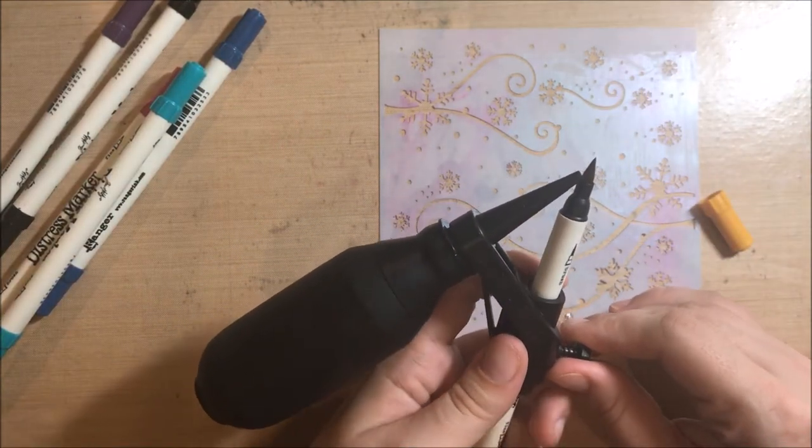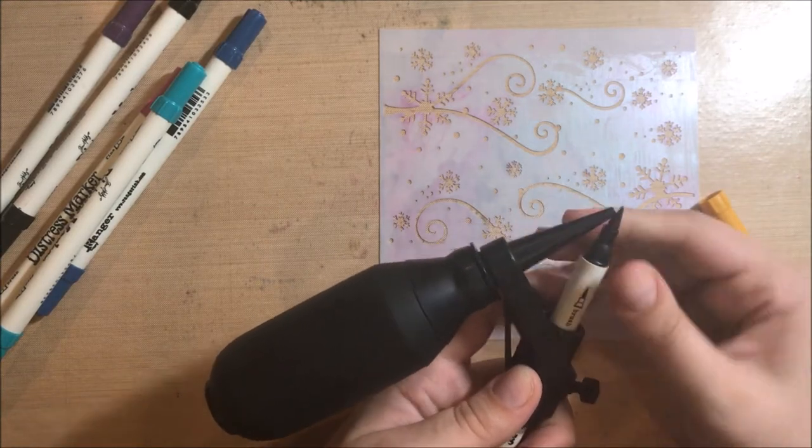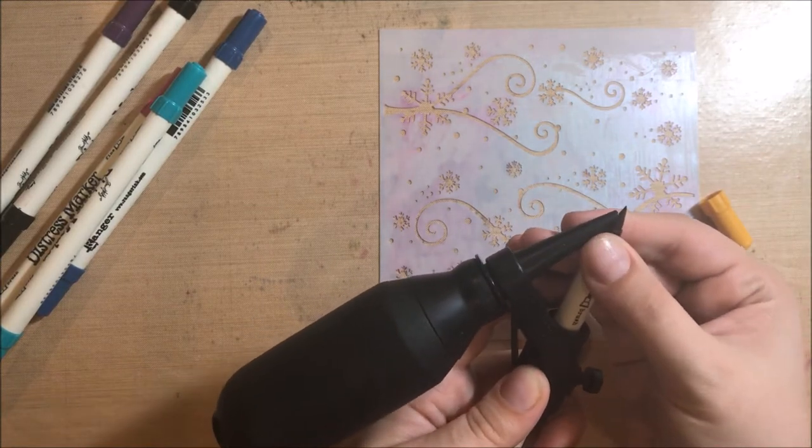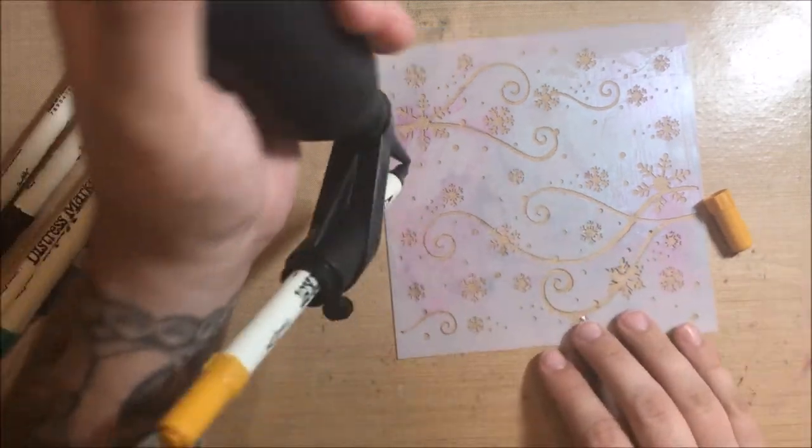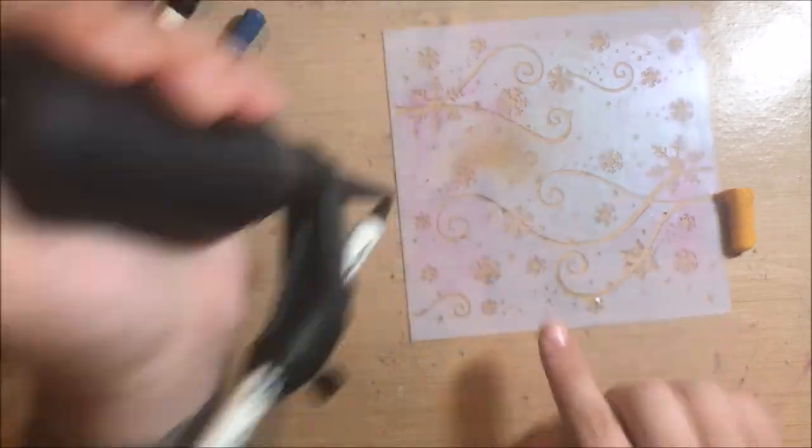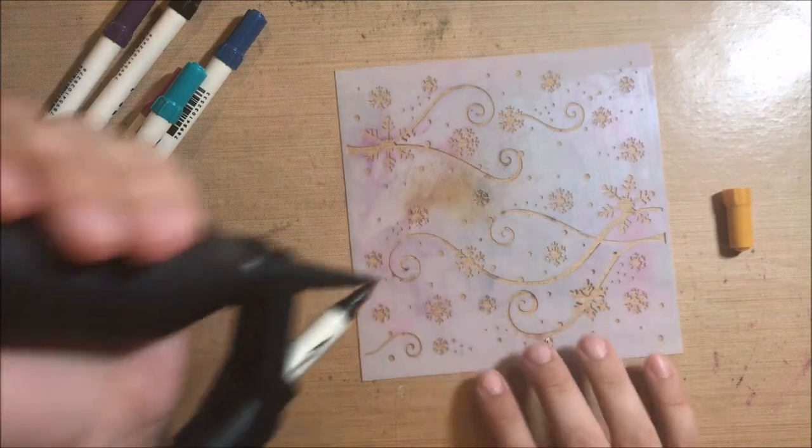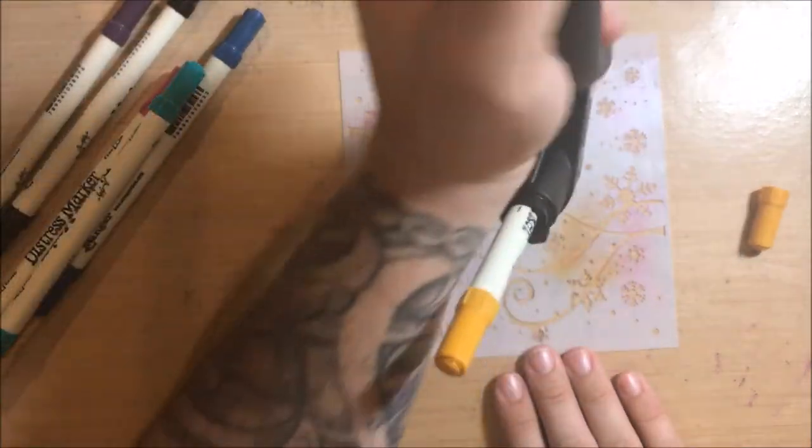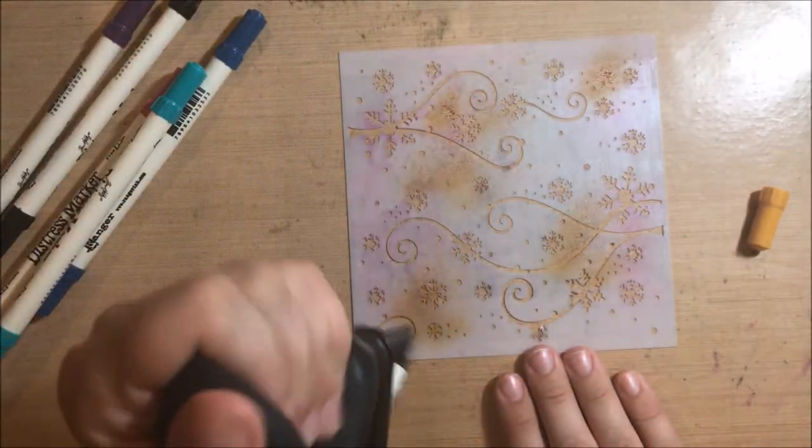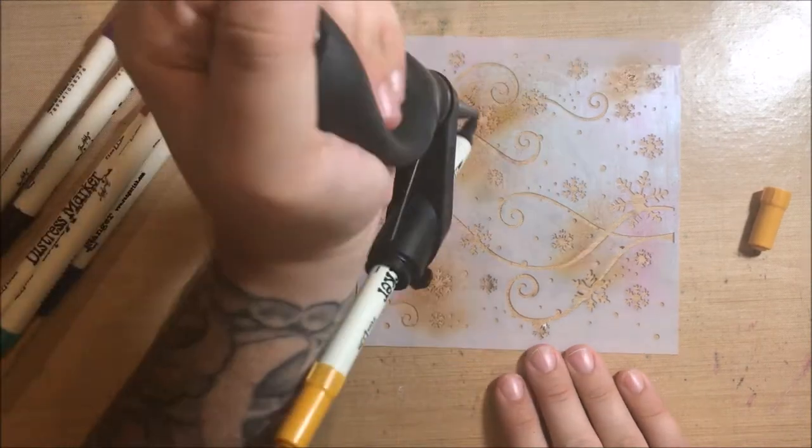But basically what you do is you slide this marker in here so that the tip is in front of the little spray nozzle area. And you tighten that little screw so that it holds the marker in place. You don't want to over tighten it because it will ruin the tip of your marker. But you want it to just be right there so that the air is blowing through the tip of your marker.